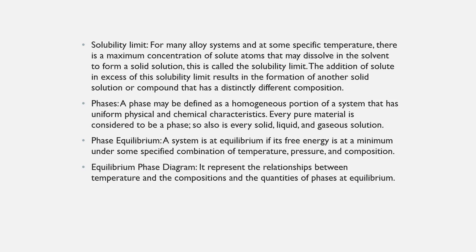Many microstructures develop from phase transformations — the changes that occur between phases when temperature is altered. This may involve the transition from one phase to another or the appearance or disappearance of a phase. Phase diagrams are helpful in predicting phase transformations and the resulting microstructures. Equilibrium phase diagrams represent the relationship between temperature, composition, and quantities of phases at equilibrium. For binary alloys — alloys that contain two components — temperature and composition are the variable parameters.